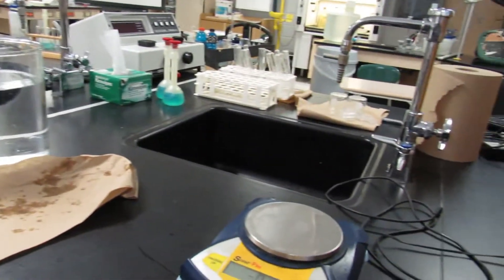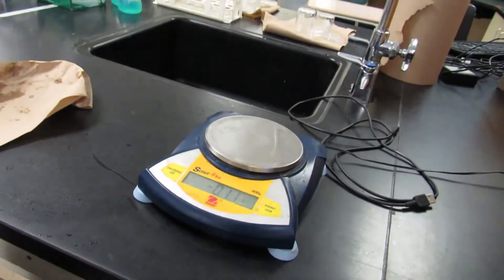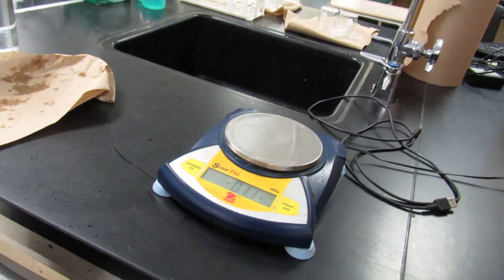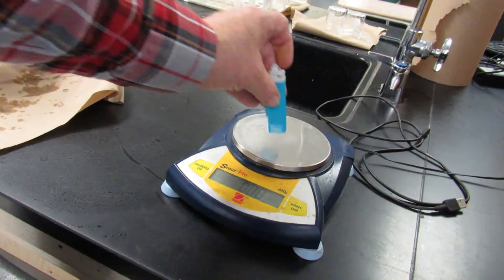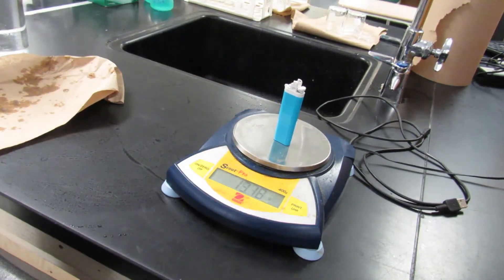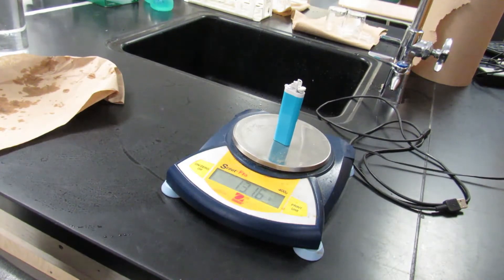And then we're going to go ahead and put it on the balance and find out what is the mass of the lighter to begin with. Zero the balance, go ahead and put it on the balance, and we see that we have a mass of 13.6 grams. That's all we have to do with the lighter for now.